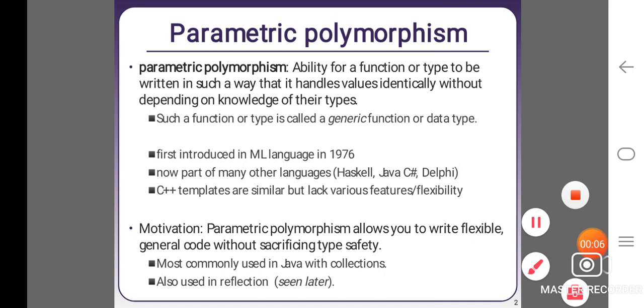Parametric polymorphism. Parametric polymorphism is the ability for a function or type to be written in such a way that it handles values identically without depending on knowledge of their types.